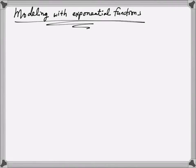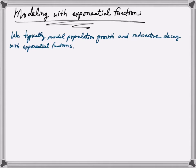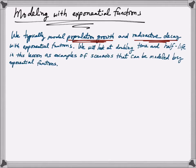Hi, this is Professor Jan-Mei Chen at California State University, Long Beach. In this video lesson, we will be looking at examples where we model with exponential functions. We typically model population growth and radioactive decay through exponential functions. There are two different categories of problems: growth problems and decay problems. We will look at doubling time and half-life as examples of scenarios modeled by exponential functions. Population growth can be thought of as a doubling time problem, and radioactive decay can be thought of as a half-life problem.